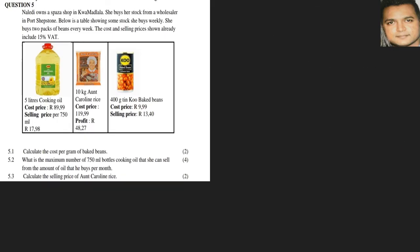Question 5.3: Calculate the selling price of Uncle Ben's rice. So our selling price is made up of our cost price plus our profit. That will give us our selling price. So they've given us this information. So all we need to do is take our cost price, which is 119.99.